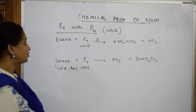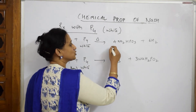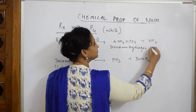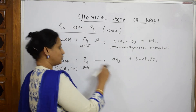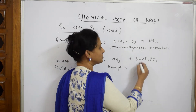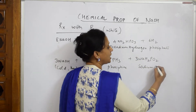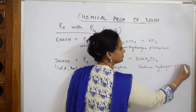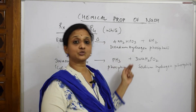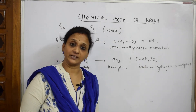When taking 8 moles of sodium hydroxide and balancing, the product formed is disodium hydrogen phosphate. When taking only 3 moles under cold conditions, the products formed are phosphine gas and sodium hydrogen phosphate (not disodium — only sodium hydrogen phosphate). Depending on the stoichiometry: 8 moles gives disodium hydrogen phosphate, 3 moles gives sodium hydrogen phosphate.